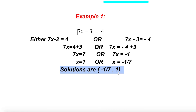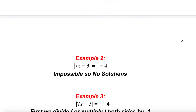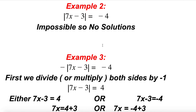To recap Example 1: we discussed both cases — either the group 7x minus 3 was negative 4 and the absolute value made it 4, or it was already 4 and the absolute value kept it 4. That's why we need both cases. For Example 2, the absolute value of 7x minus 3 equals negative 4. Can an absolute value produce a negative number? No. So the answer is simply no solution.